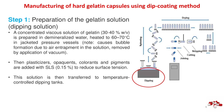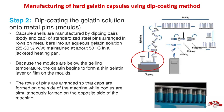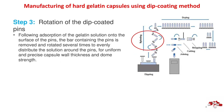Note: this causes bubble formation due to air entrapment in the solution, which is removed by application of vacuum. Then plasticizers, opacifiers, colorants and pigments are added with SLS 0.15% to reduce surface tension. This solution is transferred to temperature-controlled dipping tanks. Step 2 — Dip coating: capsule shells are manufactured by dipping pairs (body and cap) of standardized steel pins arranged in rows on metal bars into an aqueous gelatin solution (25–30% w/w) maintained at about 50°C in a jacketed heating pan.